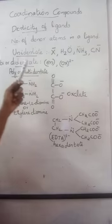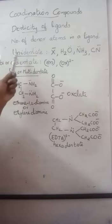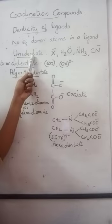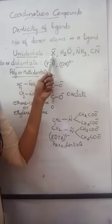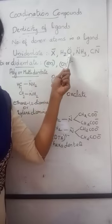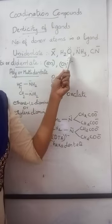Depending on denticity, ligands are of different types. Unidentate or monodentate means one donor atom is present. Examples: halides, water molecule. In water molecule, the donor atom is oxygen with a lone pair of electrons.